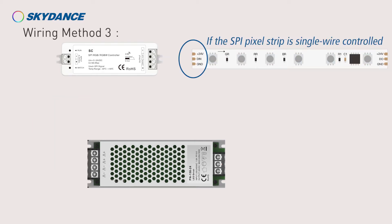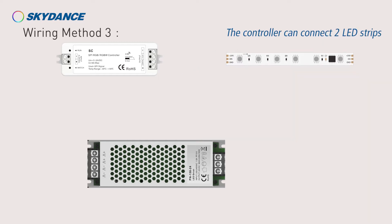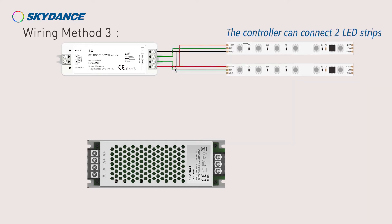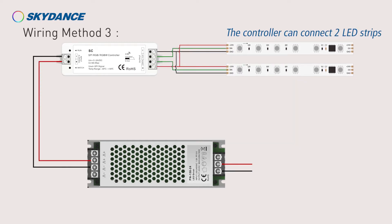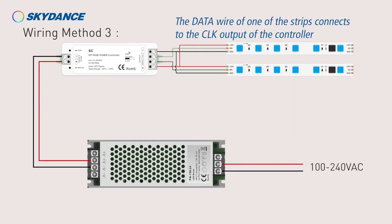If the SBI pixel strip is single-wire controlled, the controller can connect to LED strips. The data wire of one of the strips connects to the CLK output of the controller.